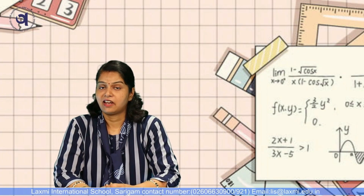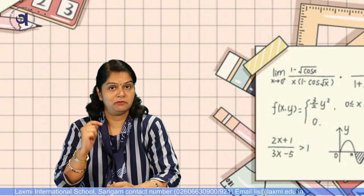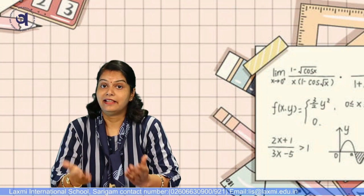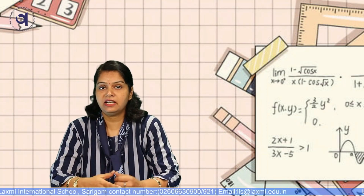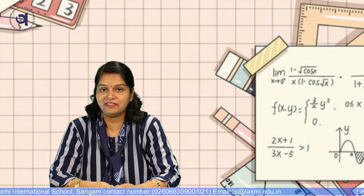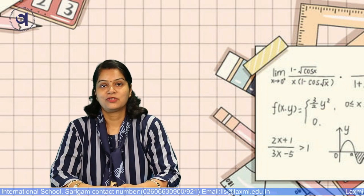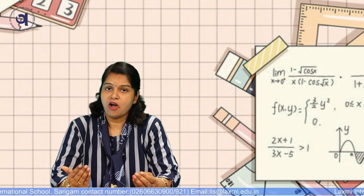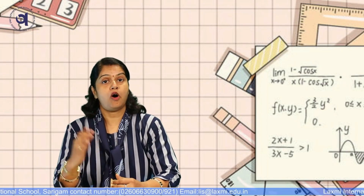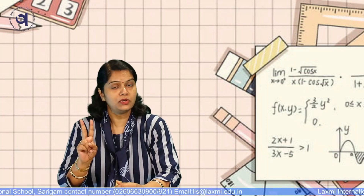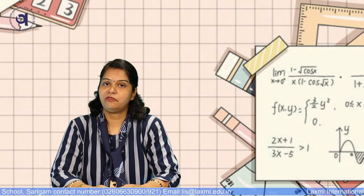Can you find the square of 65 within 1 minute, and that also without actually multiplying 65? Complicated. So let us find a small trick to find the square of all those 2-digit numbers that end with 5.